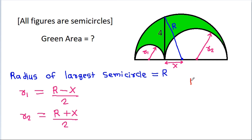And R squared will be equal to 4 squared plus X squared.